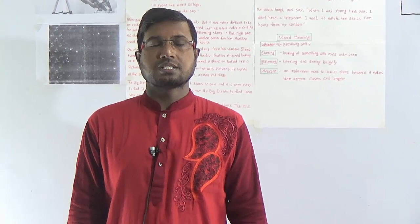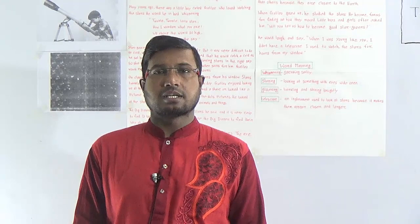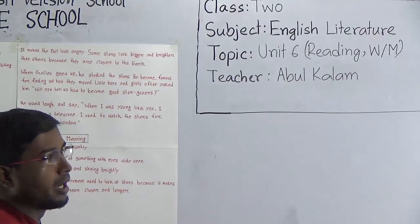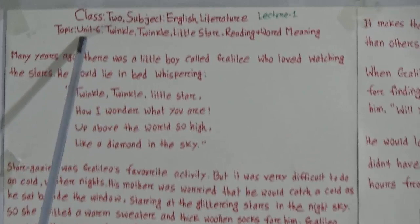Today I am going to conduct an English literature class for the students of Class 2. Our today's topic is Unit 6: Reading and Word Meaning. Unit 6 is about 'Twinkle Twinkle Little Star.'